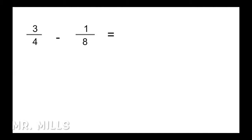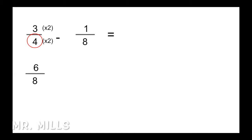Next: 3 quarters minus 1 eighth. We look at the denominators and go to the larger one, which is 8. We expand the quarter: 4 times 2 is 8, and what we do to the bottom, we do to the top — 3 times 2 is 6, giving us 6 eighths. Then 6 minus 1 is 5, keeping the denominator. So 5 eighths is our answer — 5 divided by 2 doesn't give a whole number, so it's fully reduced.